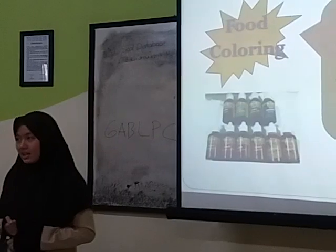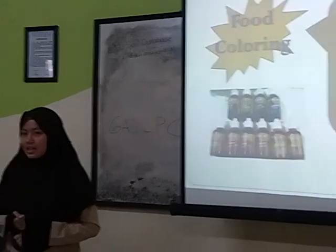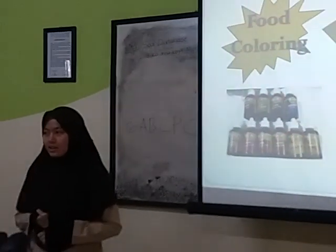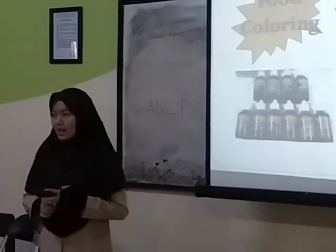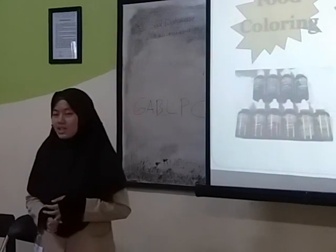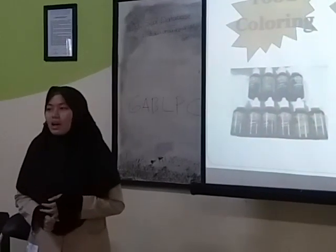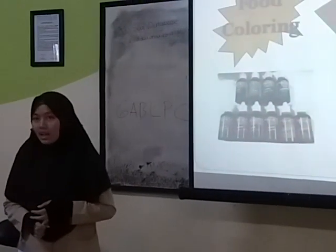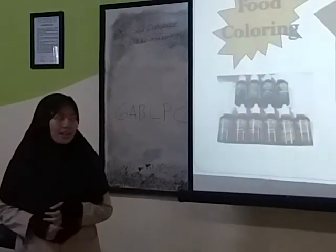First, it's natural dye, such as vegetables, fruits, and spices. And the second is artificial dye, such as methanil yellow, tazine, and others.